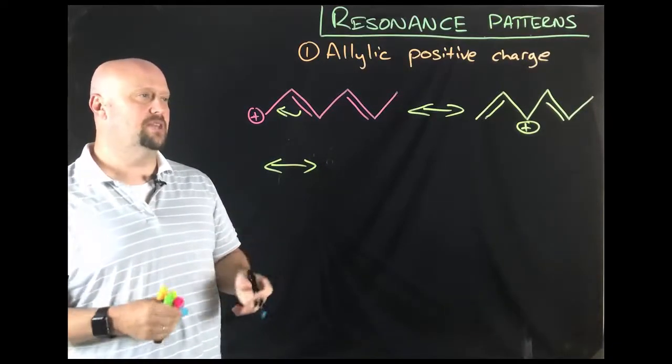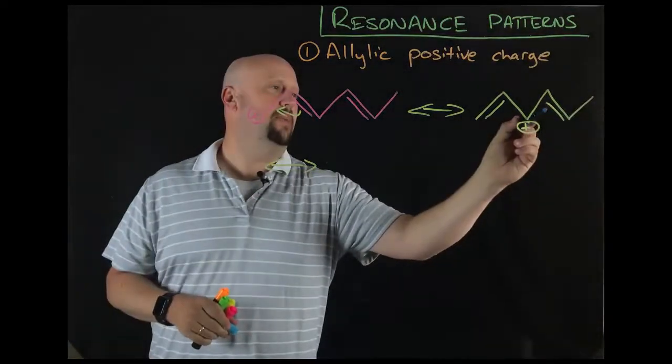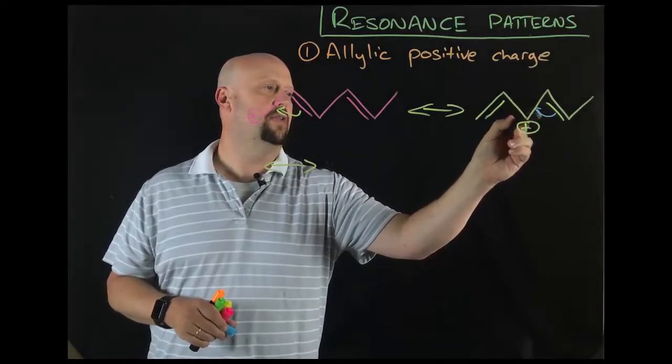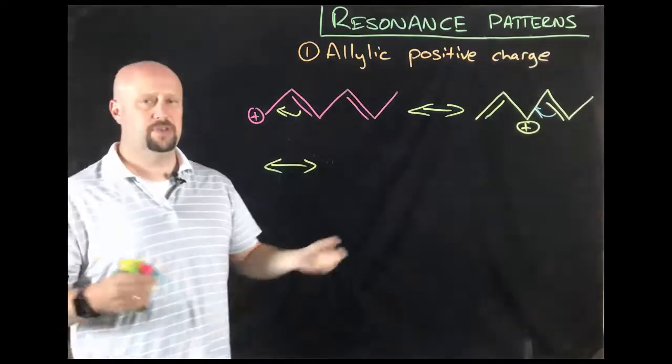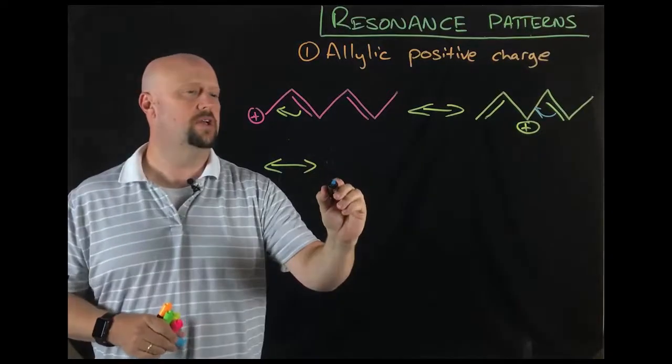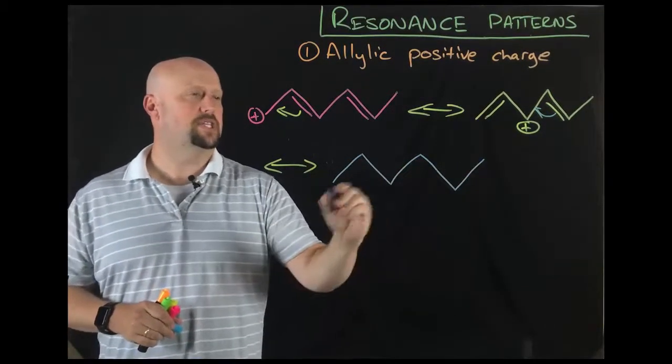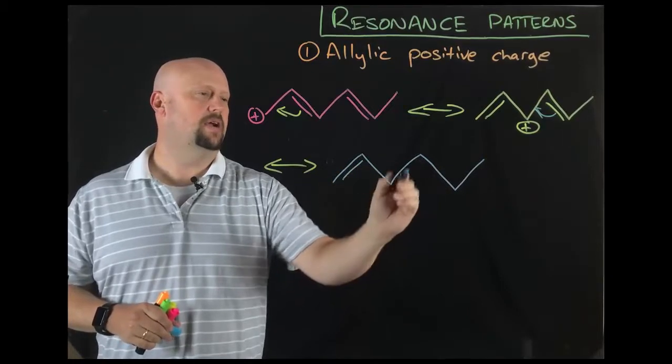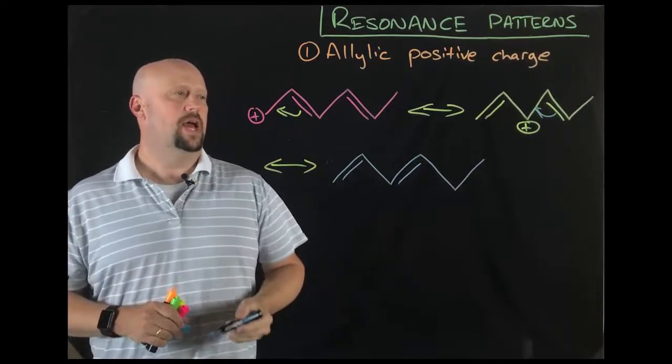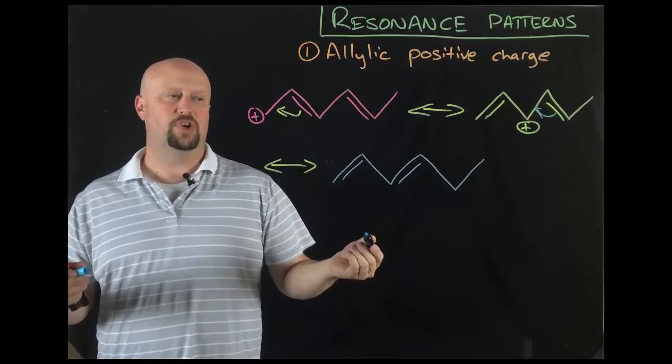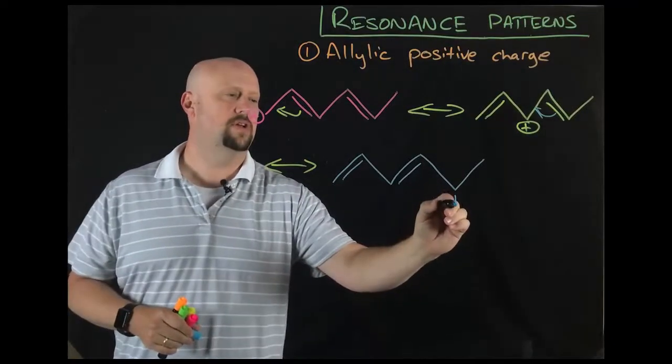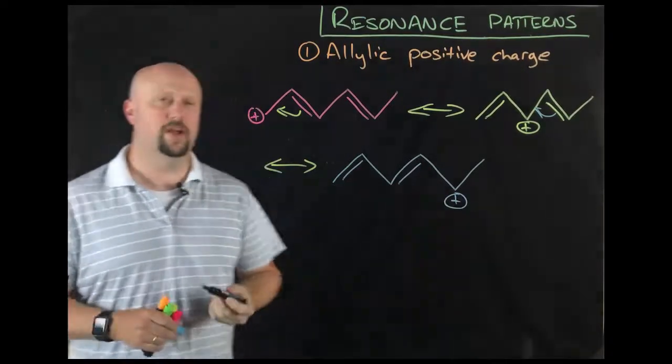And so the positive charge now shifts because since I moved this over, the positive charge is going to shift over and it's going to be there. Now that's not it, though, because I actually have a third possible resonance structure here. Where do I get that third structure? Well, as you might imagine, again, I could cause this double bond also to shift. Again, curved error notation, which is going to give us this scenario where we've got here and here.